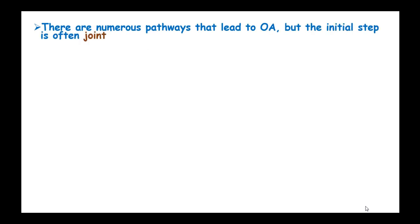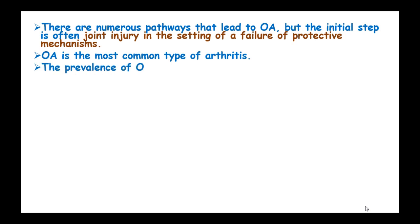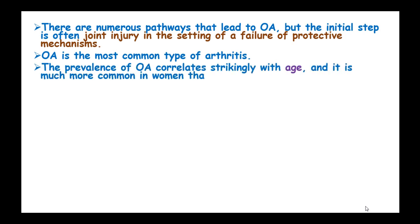There are numerous pathways that lead to osteoarthritis, but the initial step is often joint injury in the setting of a failure of protective mechanisms. Osteoarthritis is the most common type of arthritis, and its prevalence correlates strikingly with age and is much more common in women than in men.